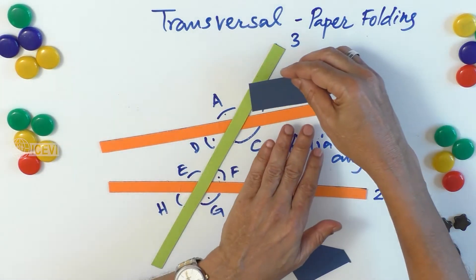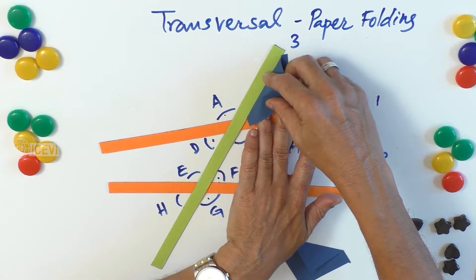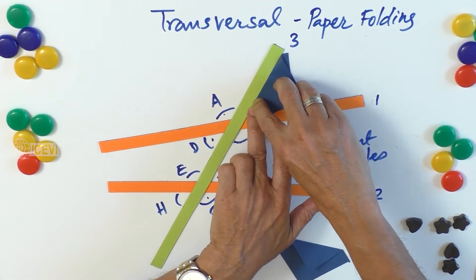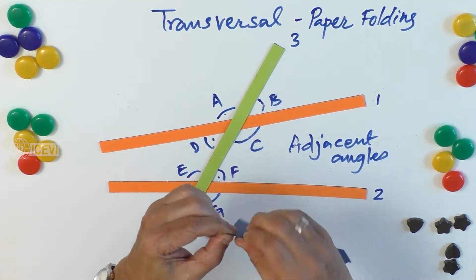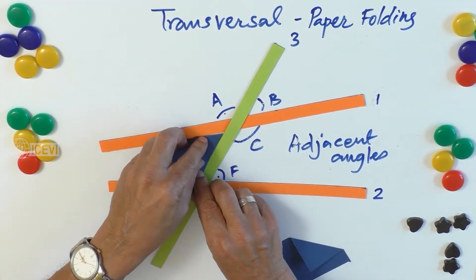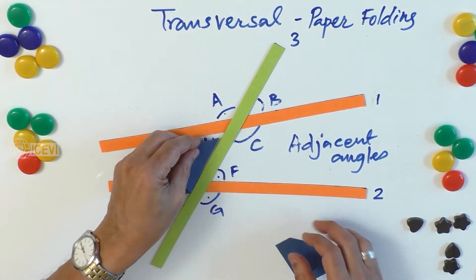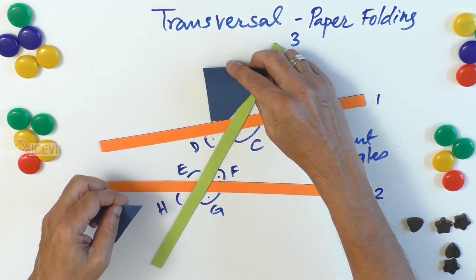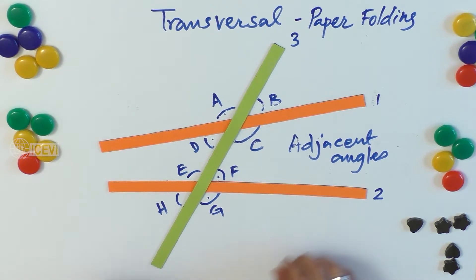Similarly, we can prove that angle B is equal to angle D. Take a sheet, place it on top of line 1, and fold the paper along line 3 to make an angle. You can notice that you get the same angle D, so B and D are equal. The same way, C and A are equal — that means vertically opposite angles are equal.